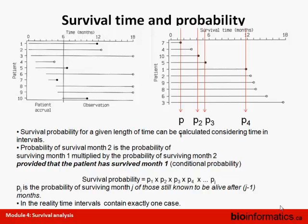If you order these patients according to follow-up time, you end up with the graph on the right. At each and every time when the event of interest occurs, you can compute the fraction of patients who are still alive. This will give you the survival probabilities. The probability of survival at month 2 is the probability of surviving month 1 multiplied by the conditional probability of surviving month 2 given survival through month 1 — this is a geometric sequence of interval probabilities.